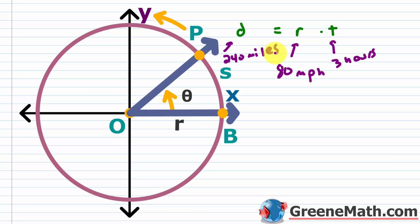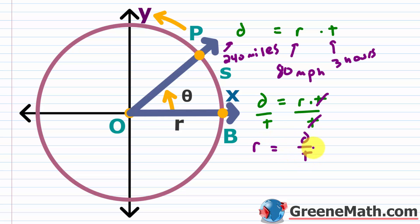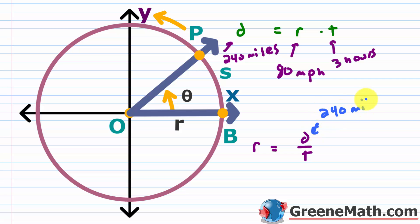Now suppose we don't know the rate of speed but we do know the distance traveled and the time it took. We can solve d equals r times t for r, giving us r equals d divided by t. So with a distance of 240 miles and a time of 3 hours, the rate is 240 divided by 3, which gives us 80 miles per hour.